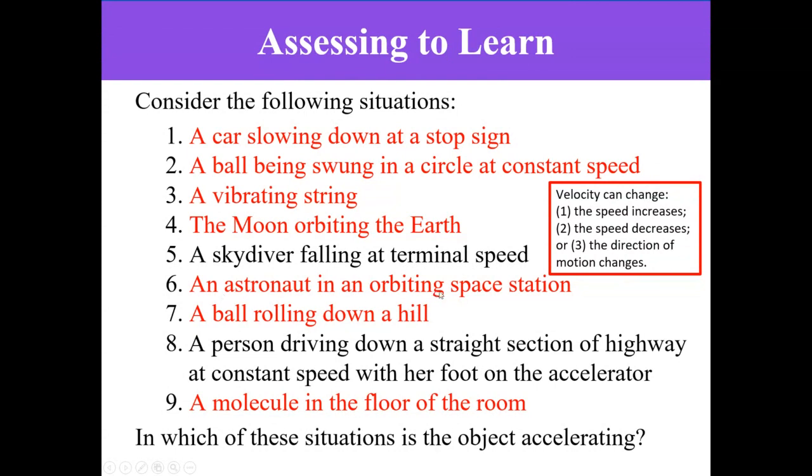Then an astronaut in an orbiting space station, just like moon orbiting Earth, anything circular, there is acceleration because the velocity changes direction continuously. A ball rolling down a hill. Yes, there is acceleration down. The velocity will be increasing.